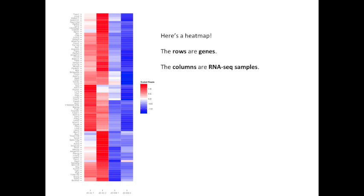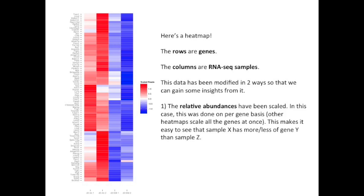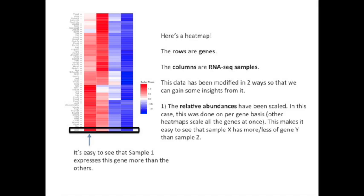Here's a heat map that I drew for a friend of mine not too long ago. The rows are genes, and the columns are RNA-seq samples. The data displayed in this heat map has been modified in two ways so that we can gain some insights from it. The first way is that the relative abundancies have been scaled.